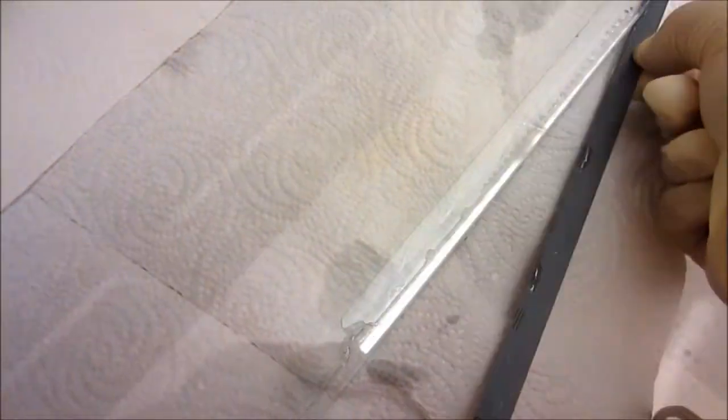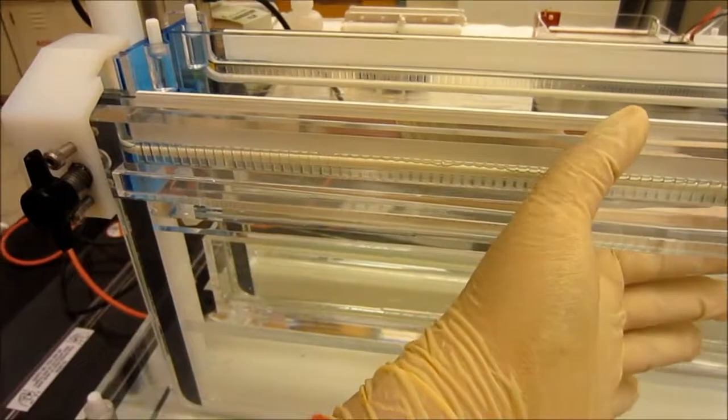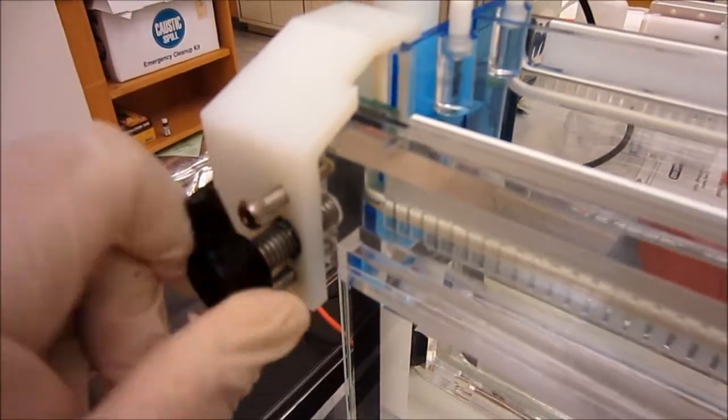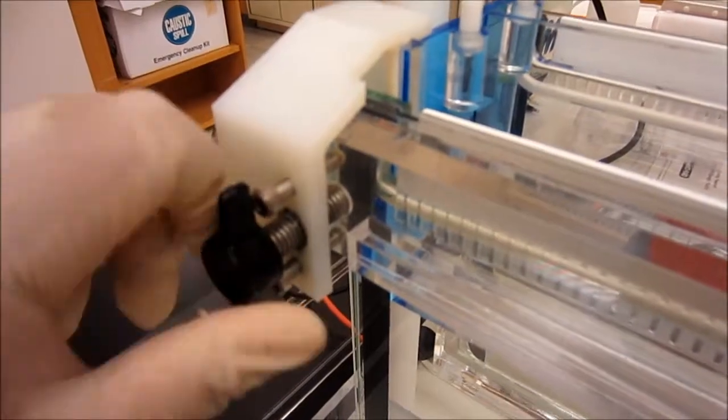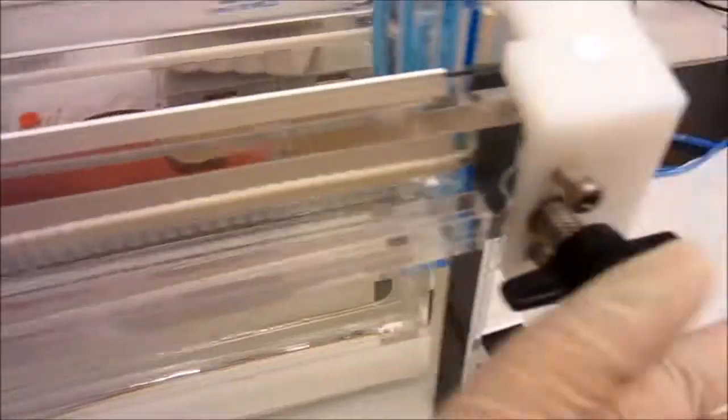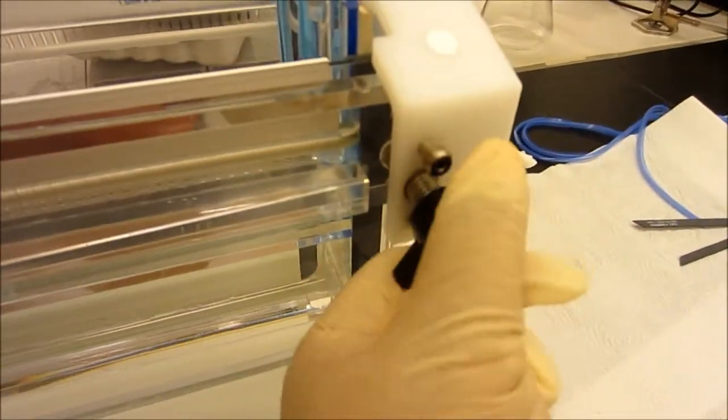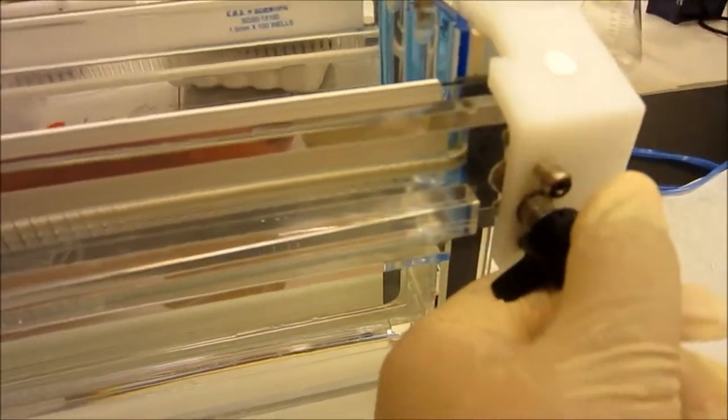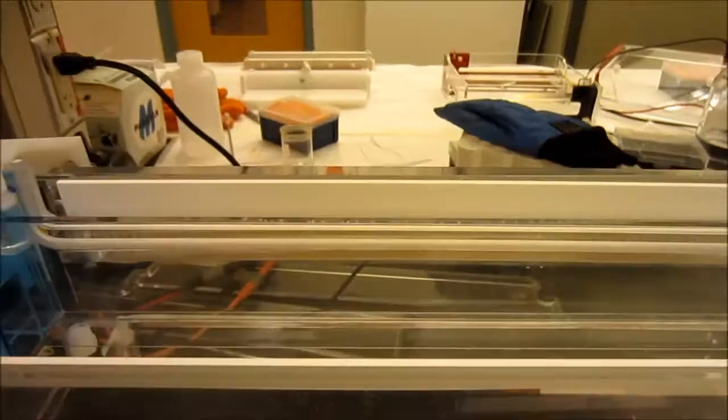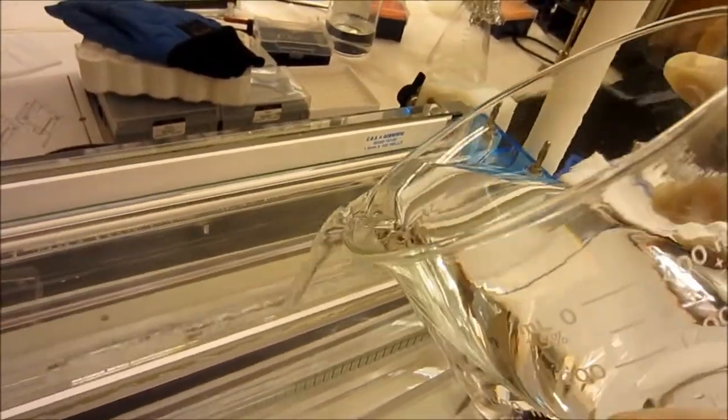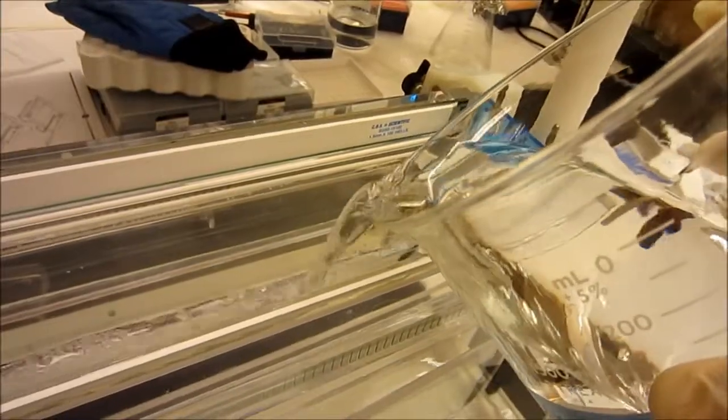The glass slide is then placed against the top reservoir of the vertical gel apparatus, and bar clamp is used to properly secure the glass slide against the top reservoir so that no buffer will leak later. One times TBE buffer is poured into the top reservoir just enough until it covers the PAGE gel.